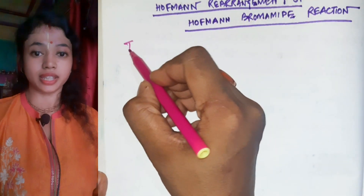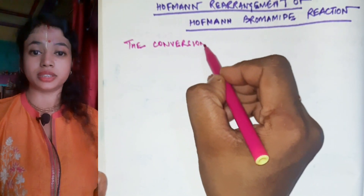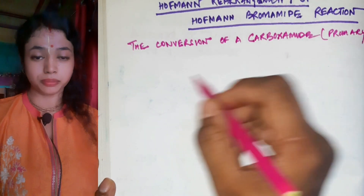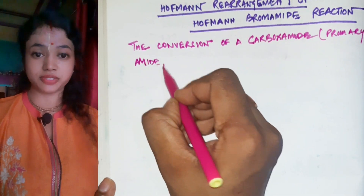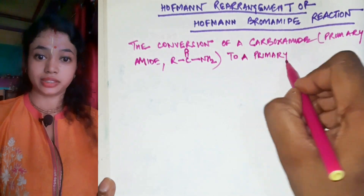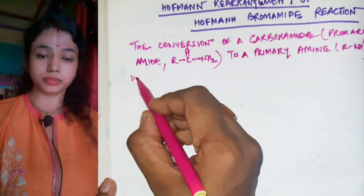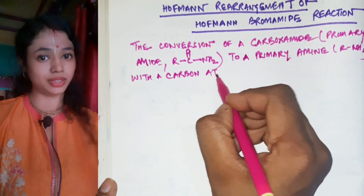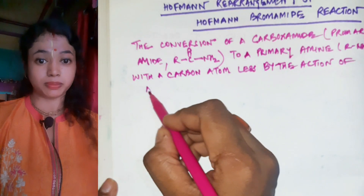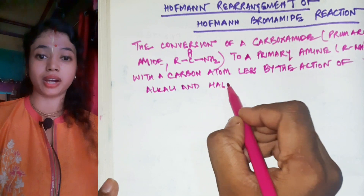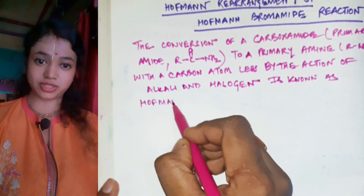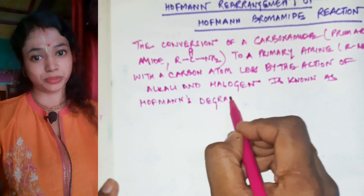This reaction is covered at secondary school level and also in degree or graduation level. It involves the conversion of carboxamide — that is R-C(=O)-NH2 — to a primary amine. The product has one carbon atom less than the reagent, which is why it is known as Hoffman's degradation reaction.